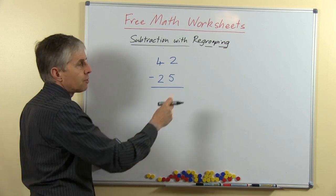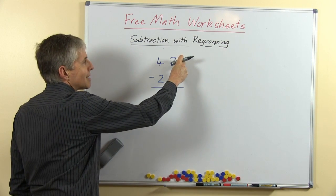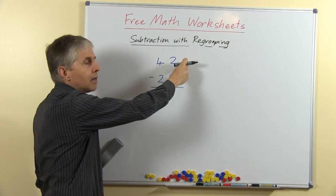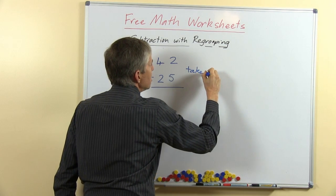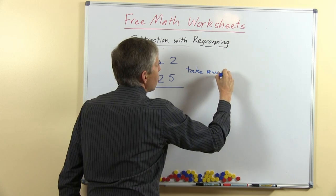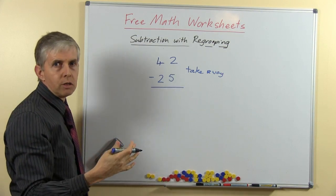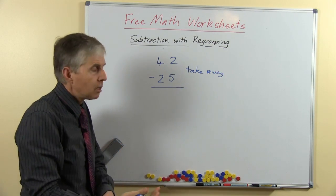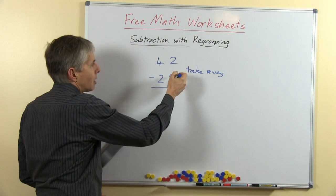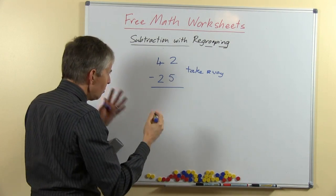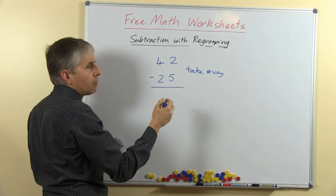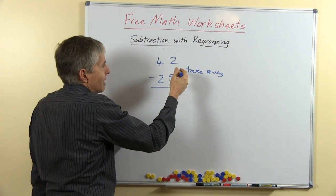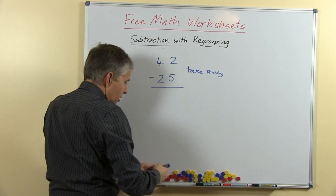So I prefer to tell students to focus on the first number as the number that we have at the moment, and then we are going to take away. So I deliberately use the words take away as common everyday language, rather than subtract, and talk about 2 take away 5. Can we do that? Alright, so we can do it, but only if we do regrouping, or we can say no there aren't enough, so we're going to regroup.